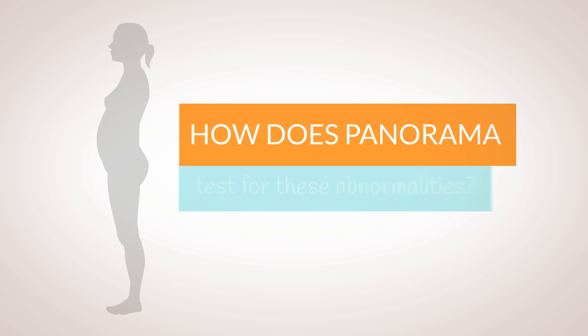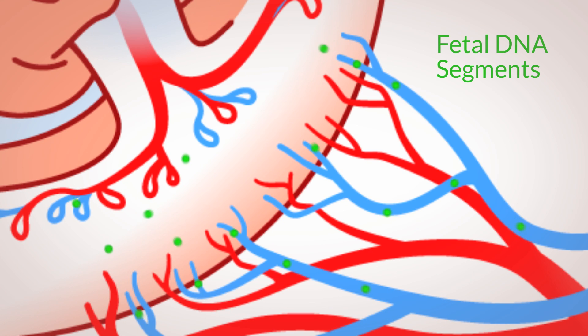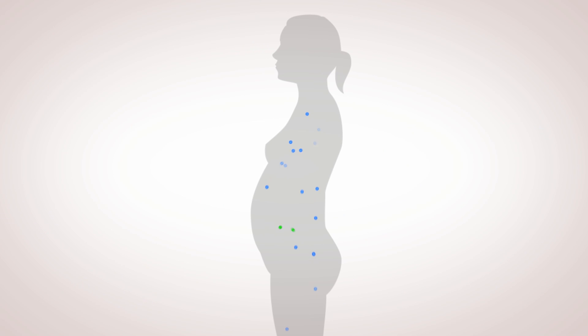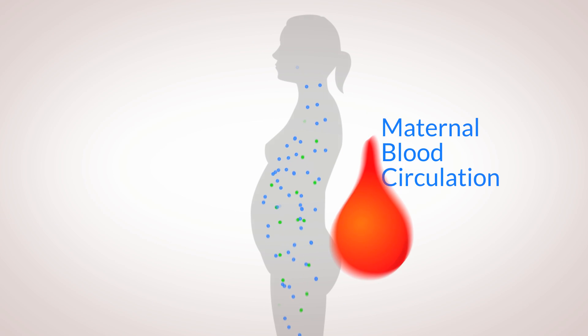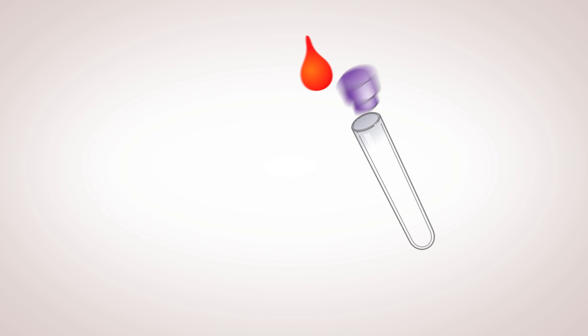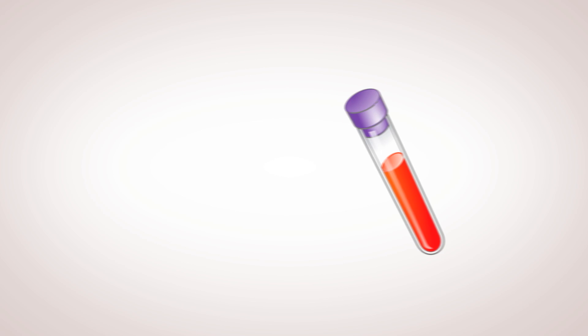How does Panorama test for these abnormalities? When a woman is pregnant, segments of DNA from the fetus enter the mother's bloodstream via the placenta. So, all the Panorama test requires is a simple blood draw from the mother.